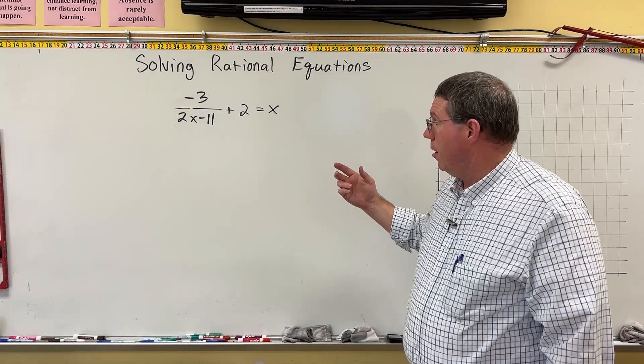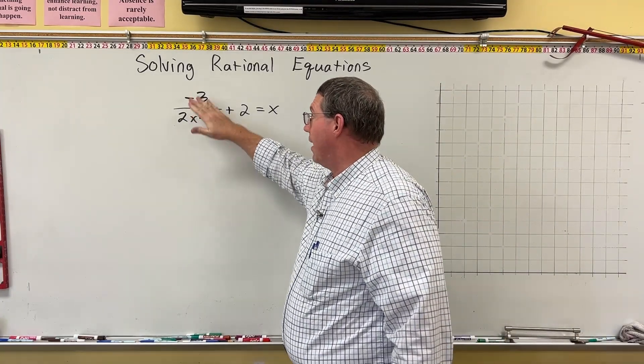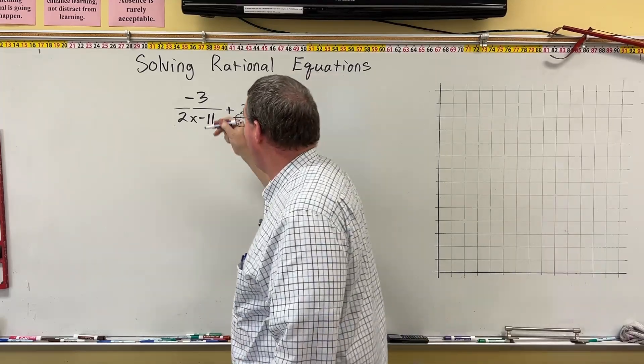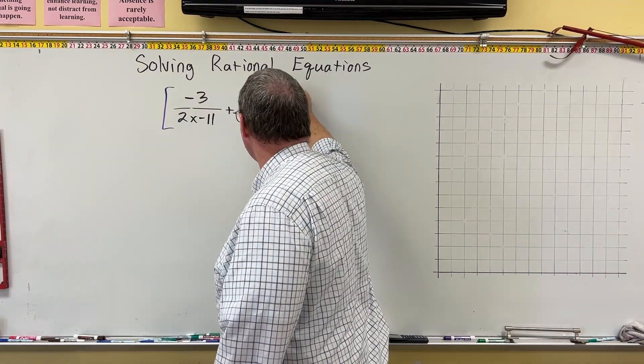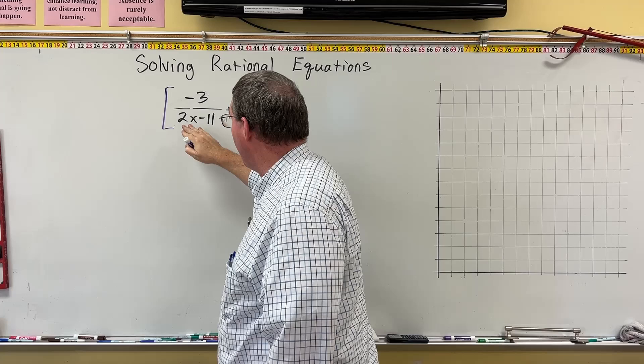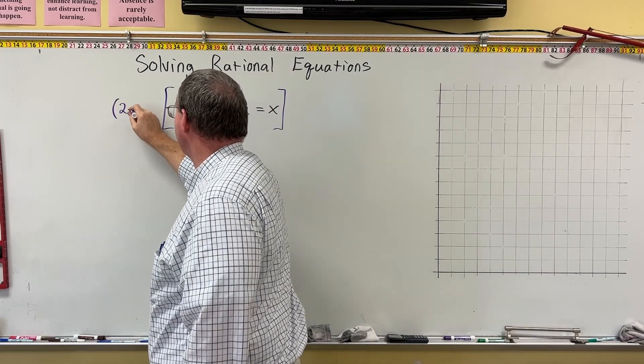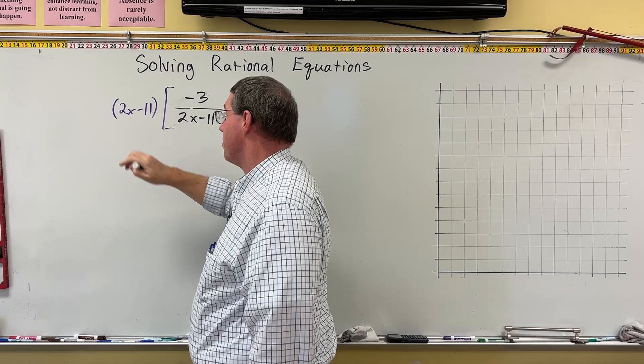Okay, so here's another example. This one only has one fraction in it, but it's a doozy. But we're going to cancel the denominator the same way we always have. We're going to multiply by the denominator, which is 2x minus 11. So we're going to multiply by 2x minus 11 in parentheses.